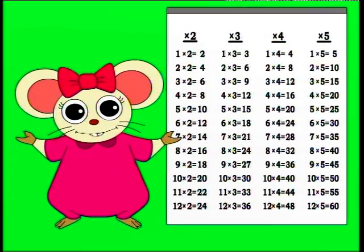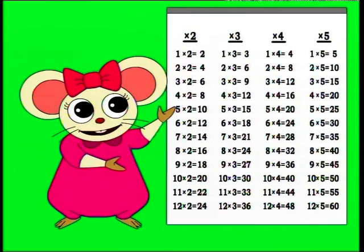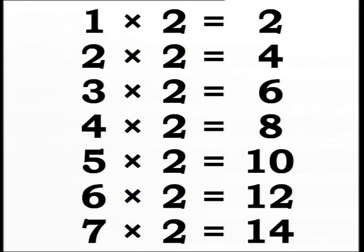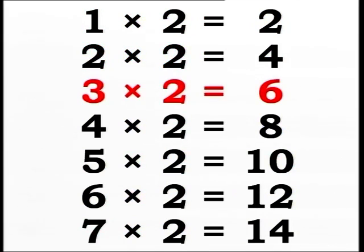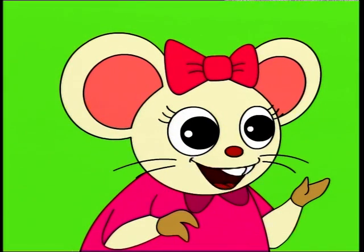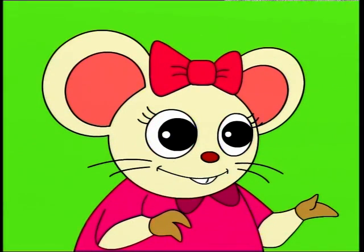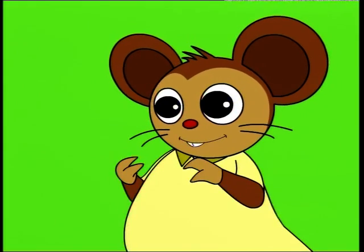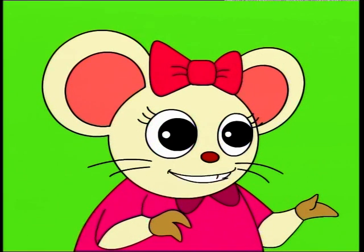Let's look at the two, three, four, and five times tables. Okay, let's multiply by two. One multiply two equals two. Two multiply two equals four. Three multiply two equals six. Four multiply two equals eight. That's how I counted the bananas so quickly. Oh, so that's how it's done. Here's the rest of the two times table, Adam.